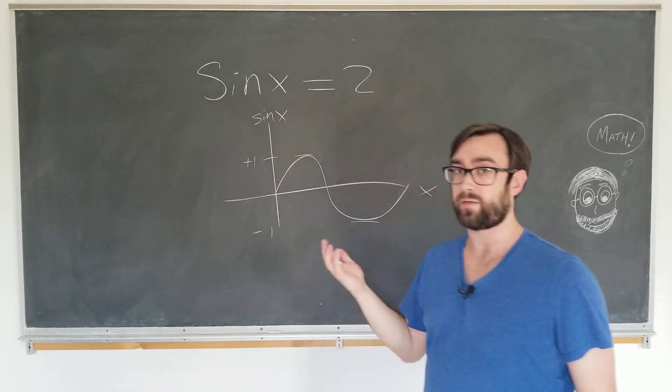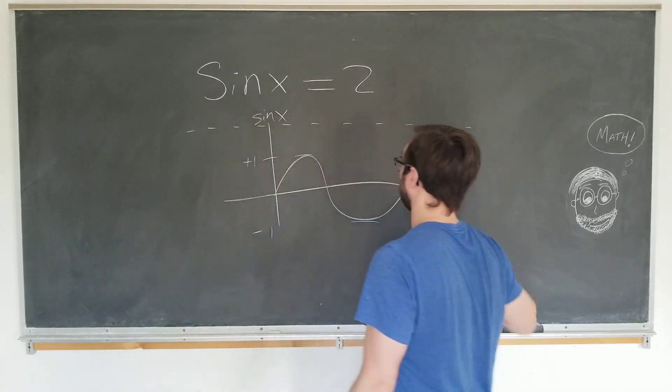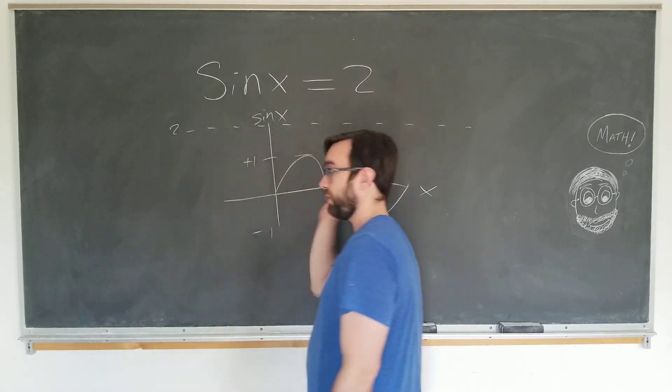So how can there be a value of the sine function such that when you plug it in, you get 2? How is this even possible?